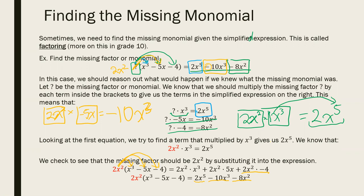This is essentially a trial and error method. There is a different, more mathematical approach: you could use division. To figure out what to multiply x³ by to get 2x⁵, you could take the product 2x⁵ and divide by x³. Using exponent laws, that gives you 2x squared. That's a bit more mathematical instead of just guessing and checking, but because the question was relatively easy, either method works.